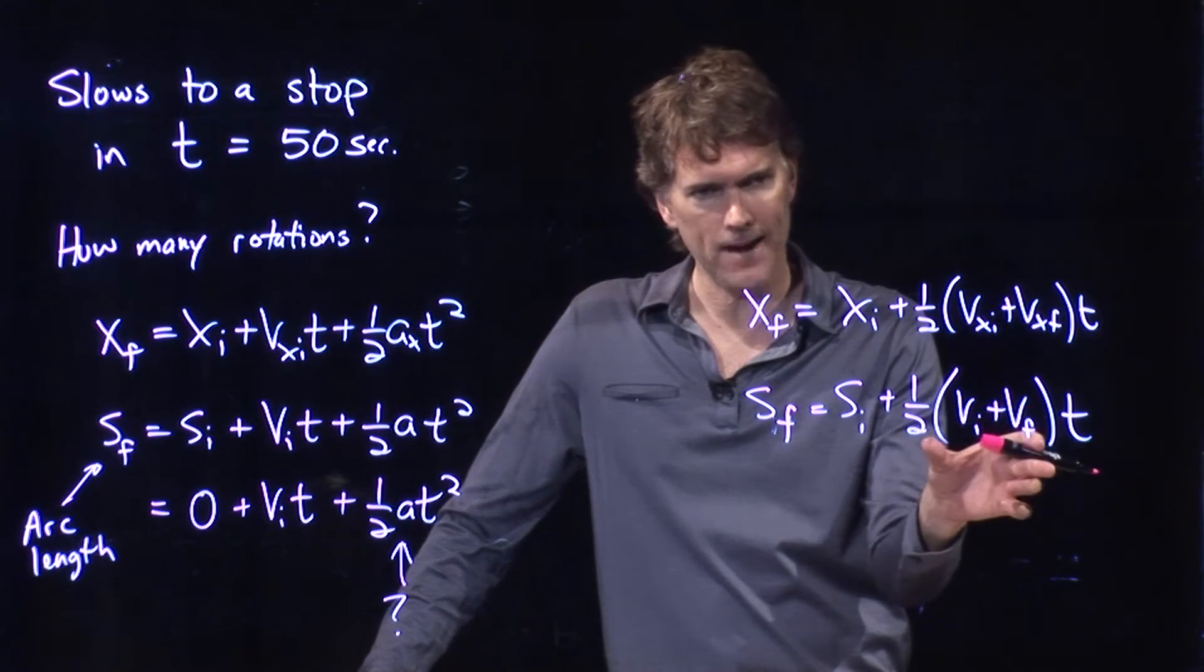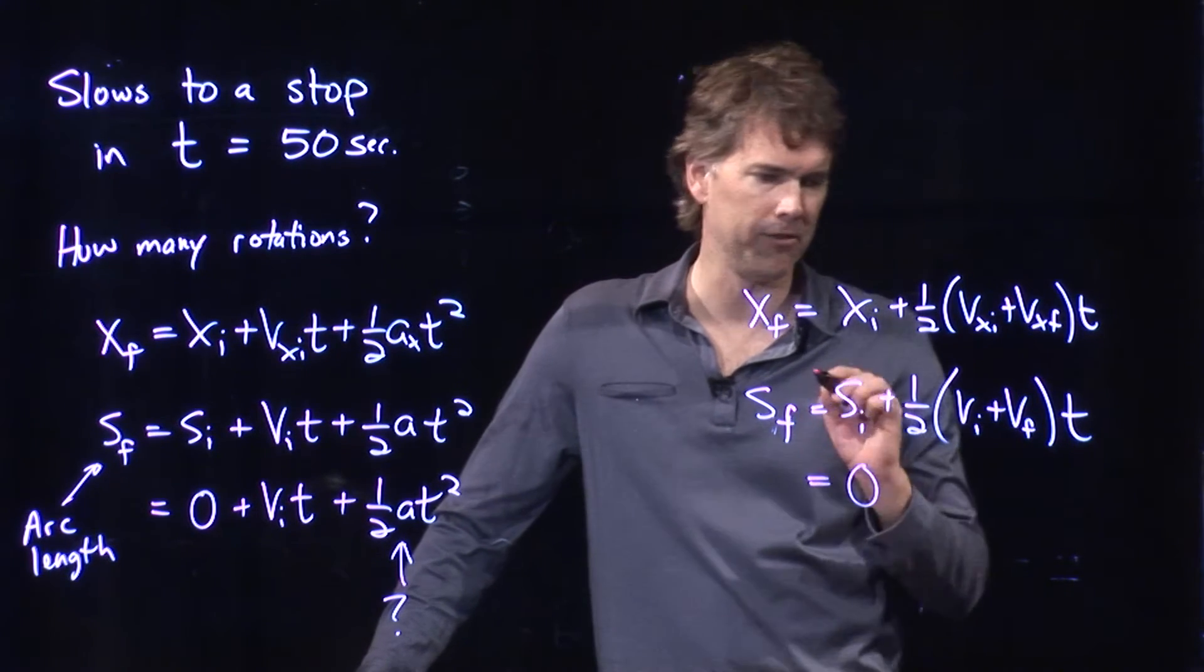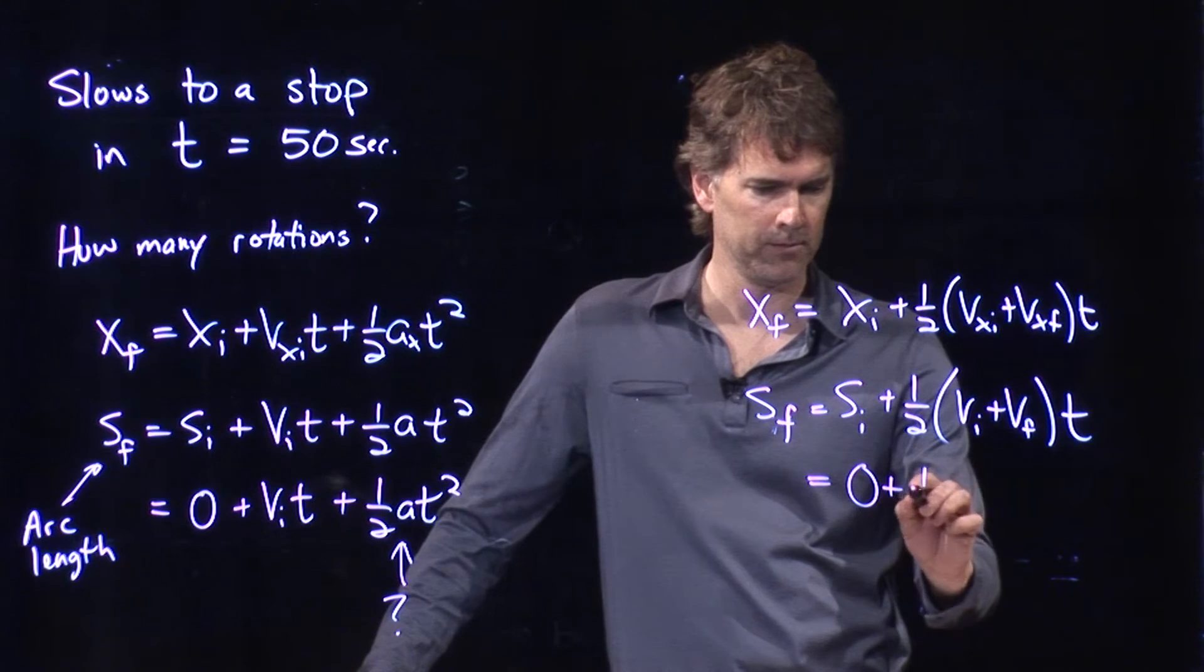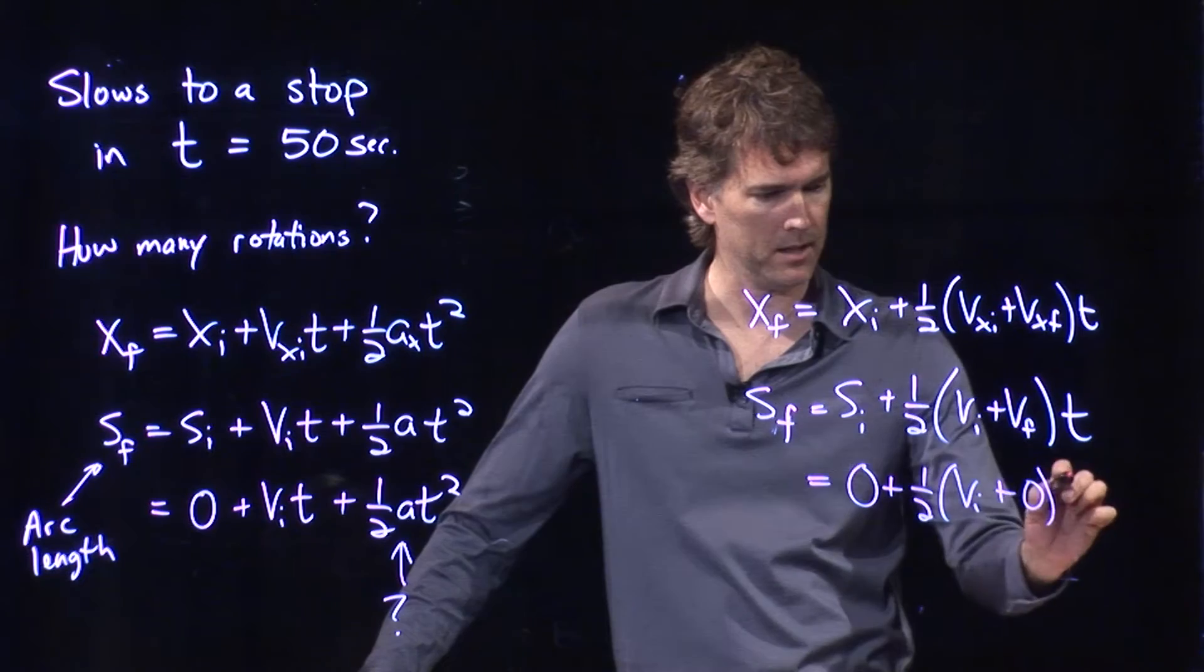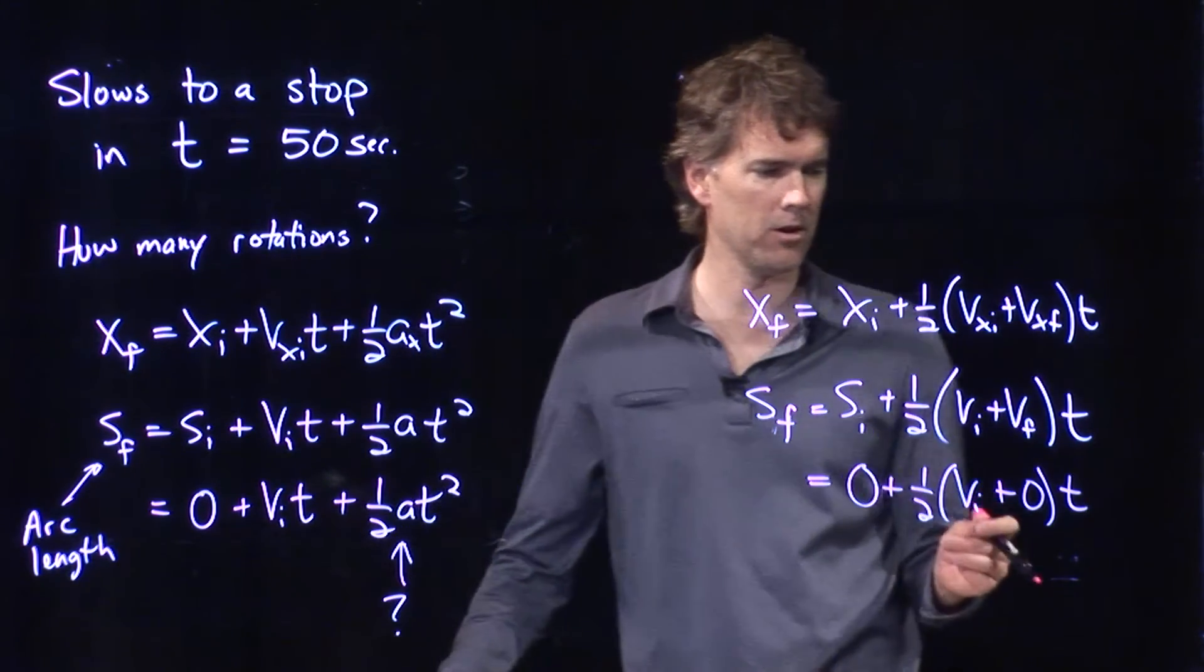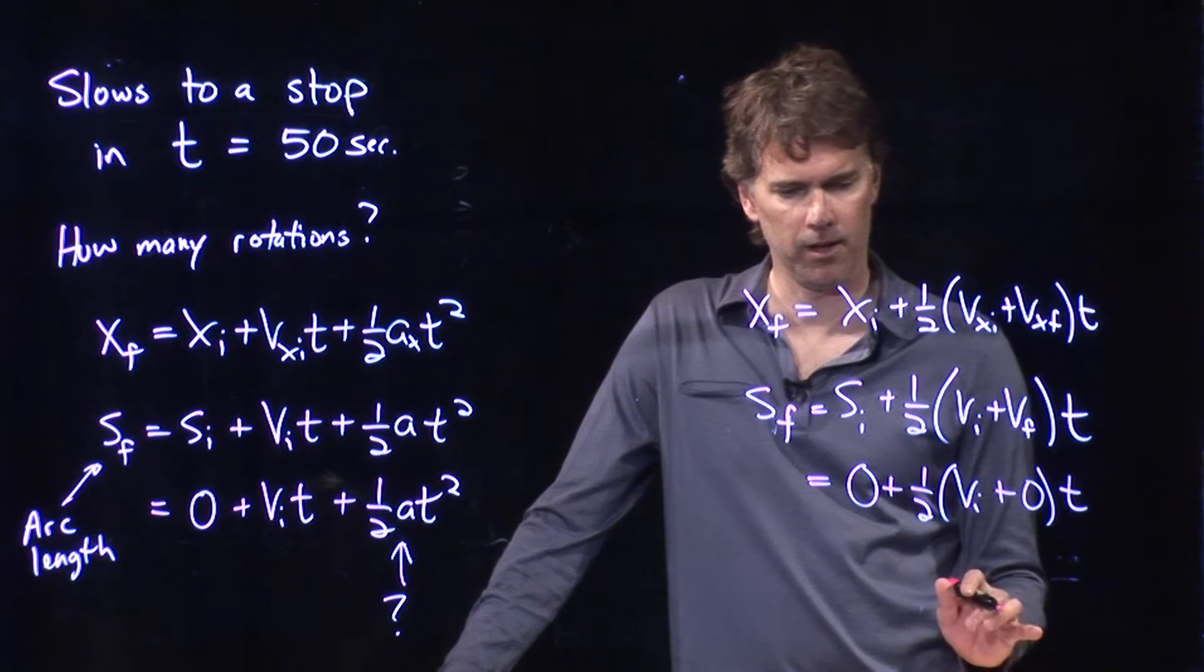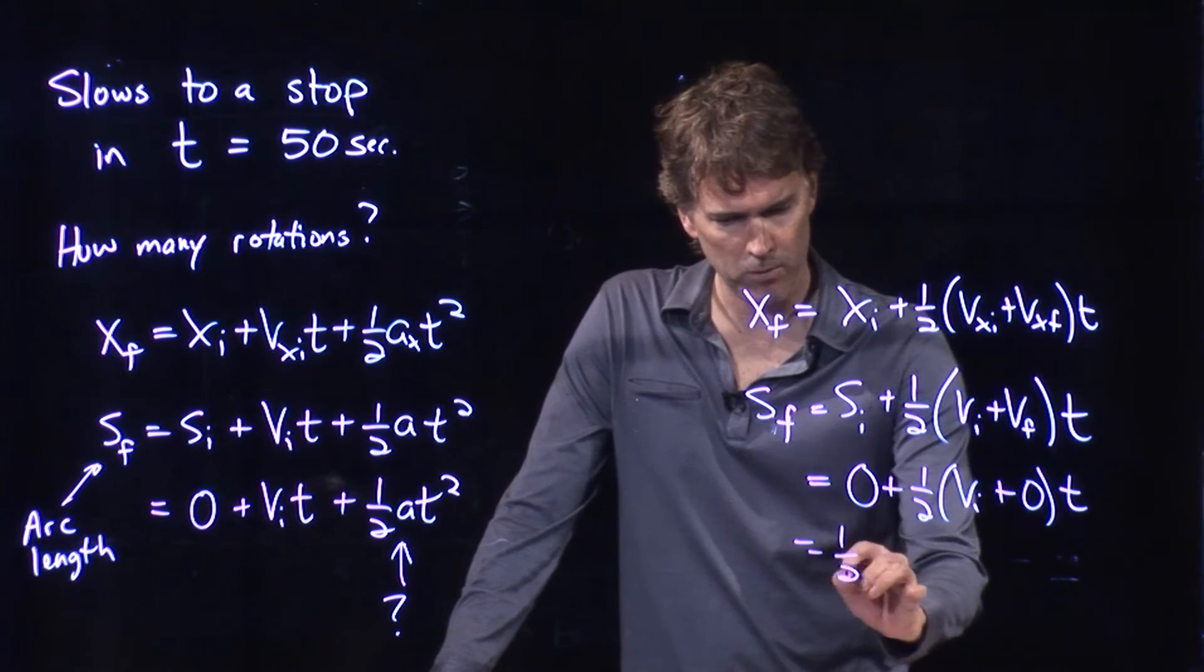And so that's all we're saying here is that how far is this thing going to move? It's the average velocity and we know all these things now. We start at zero, we have a vi which we just solved for, we end at zero because the final speed is zero because we come to rest, and so now we can calculate sf.